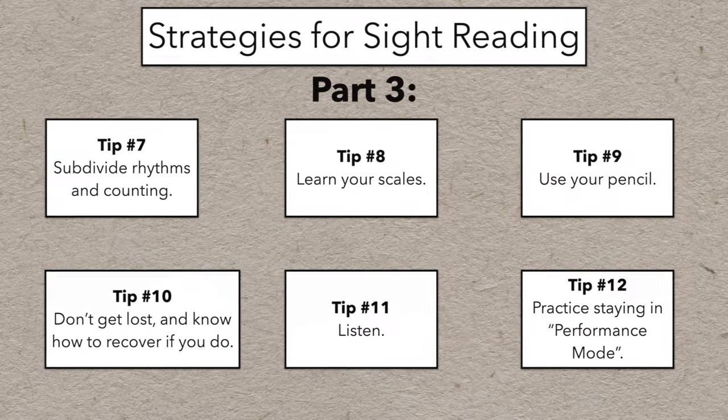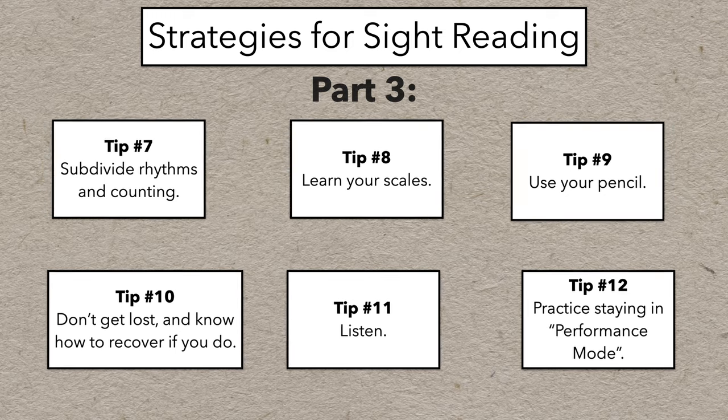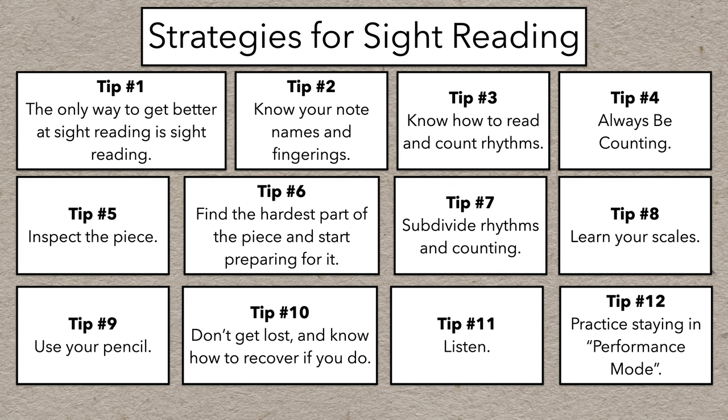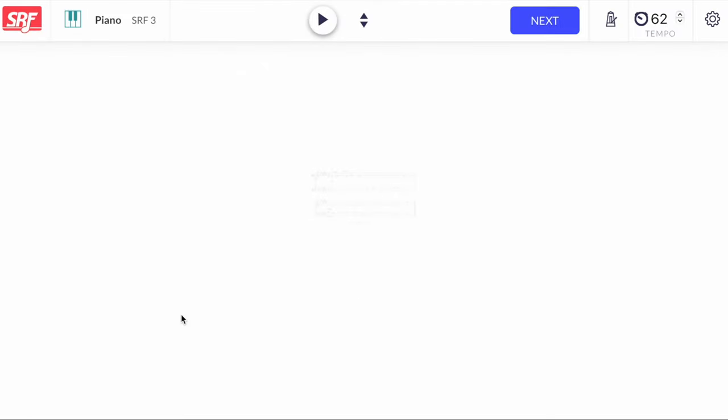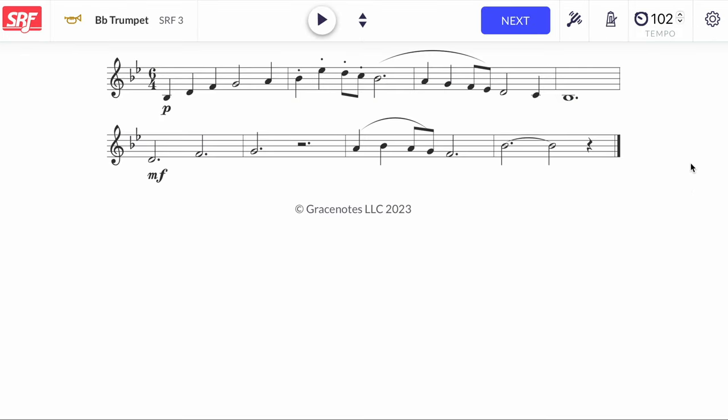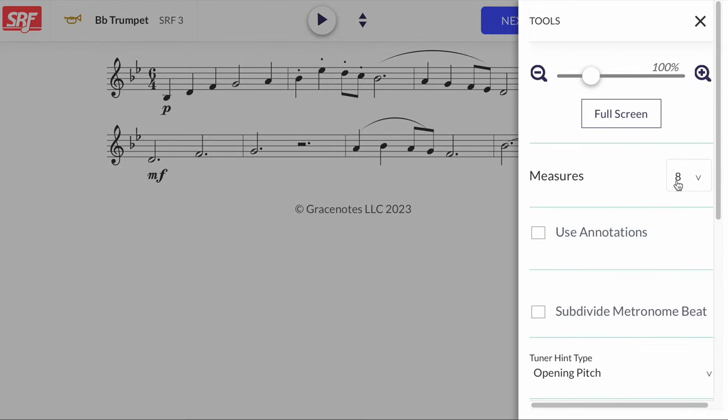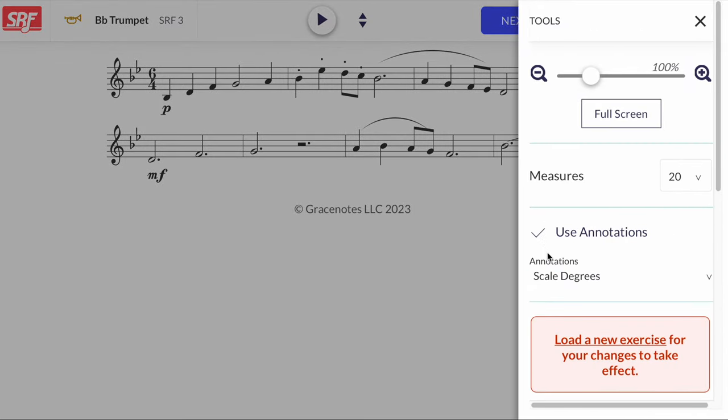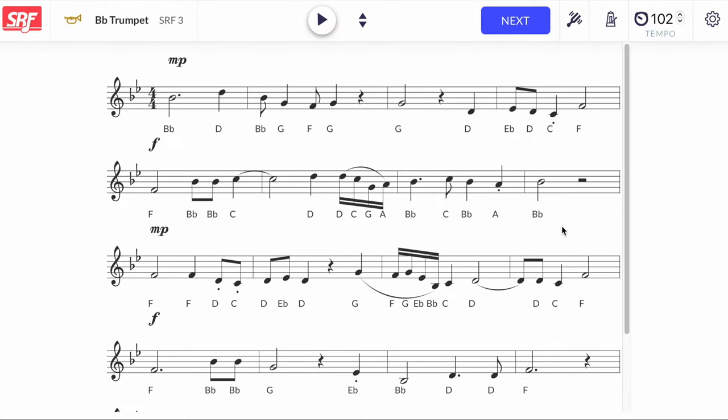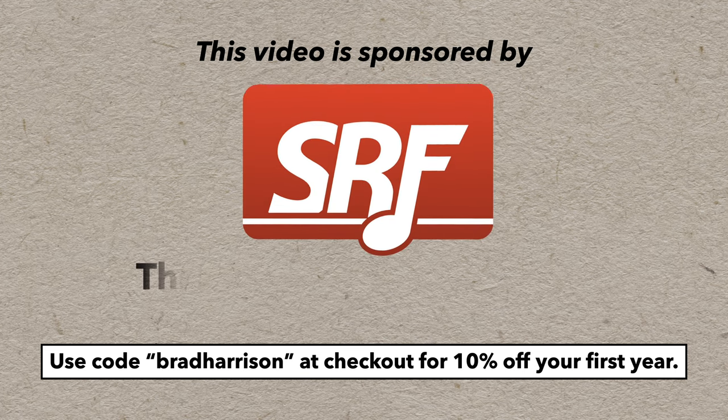And those are all the tips for part three. They're a bit more challenging than the basics we've covered so far, but if you start putting these into practice, you're going to see a huge increase in your sight reading abilities. There's one more installment planned in this series that's coming up in a few weeks, and in the meantime, I want to give a huge shout out to Sight Reading Factory for their support of this series. It really is a fantastic product that I use and wholeheartedly recommend. You can create new exercises to practice sight reading instantly and infinitely with all kinds of ways to customize the exercises to make them more or less challenging, or to focus on specific parts of your playing. Be sure to use my code to save 10% off your first year.